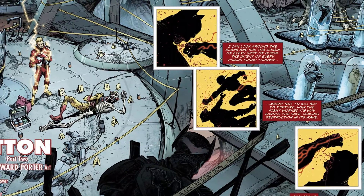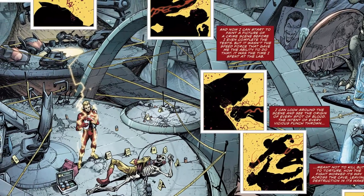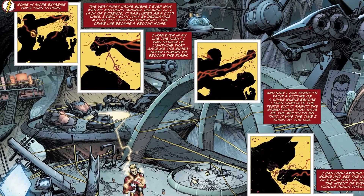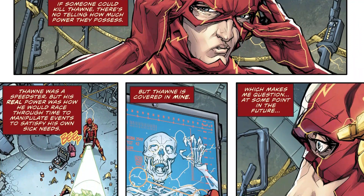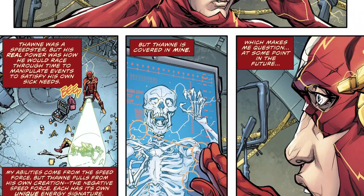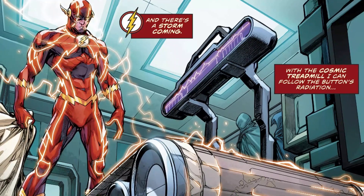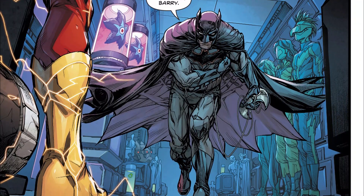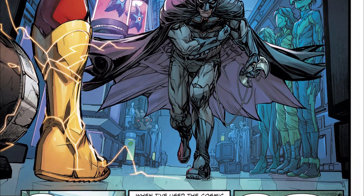Determined to unravel the mystery surrounding the button and the death of Eobard Thawne, Barry Allen conducts his own investigation. Through his research, he discovers that the energy on Thawne's lifeless body matches the energy emitted by the button. Realizing the significance of this connection, Barry learns that Thawne's manipulations extend beyond his own demise. Wally West informs Barry that someone has been tampering with the fundamental reality of the entire DC universe. Preparing to embark on a journey through time and space using the cosmic treadmill, Barry Allen is interrupted by an injured Batman who insists on accompanying him. Despite Barry's initial disapproval, Batman's determination convinces him to allow his presence.